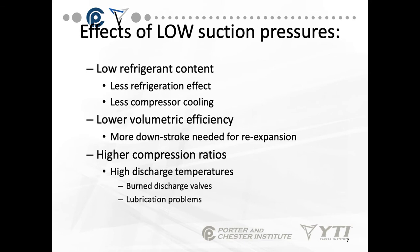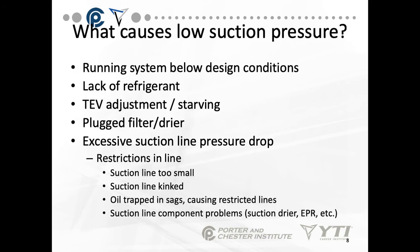The effects of low suction pressure: low refrigerant content results in less refrigeration effect, less compressor cooling, more downstroke needed for re-expansion, and high compression ratios. High compression ratios lead to high discharge pressures, burned discharge valves, and lubrication problems. Causes of low suction pressure include: running below design temperatures, lack of refrigerant, TEV adjustment starving the evaporator, plugged filter dryer, excessive suction line pressure drop from restrictions, undersized or kinked lines, oil trapped in line set sags, and suction line component problems such as a suction dryer or UPR. Lower than normal suction pressures will cause compressor issues.